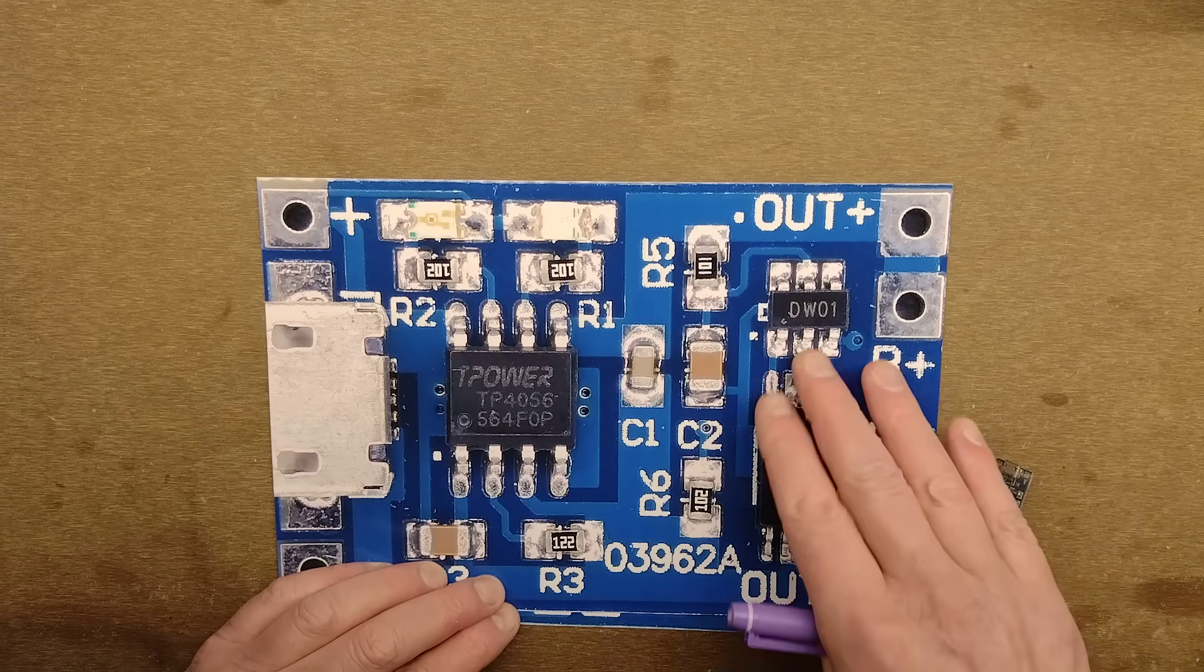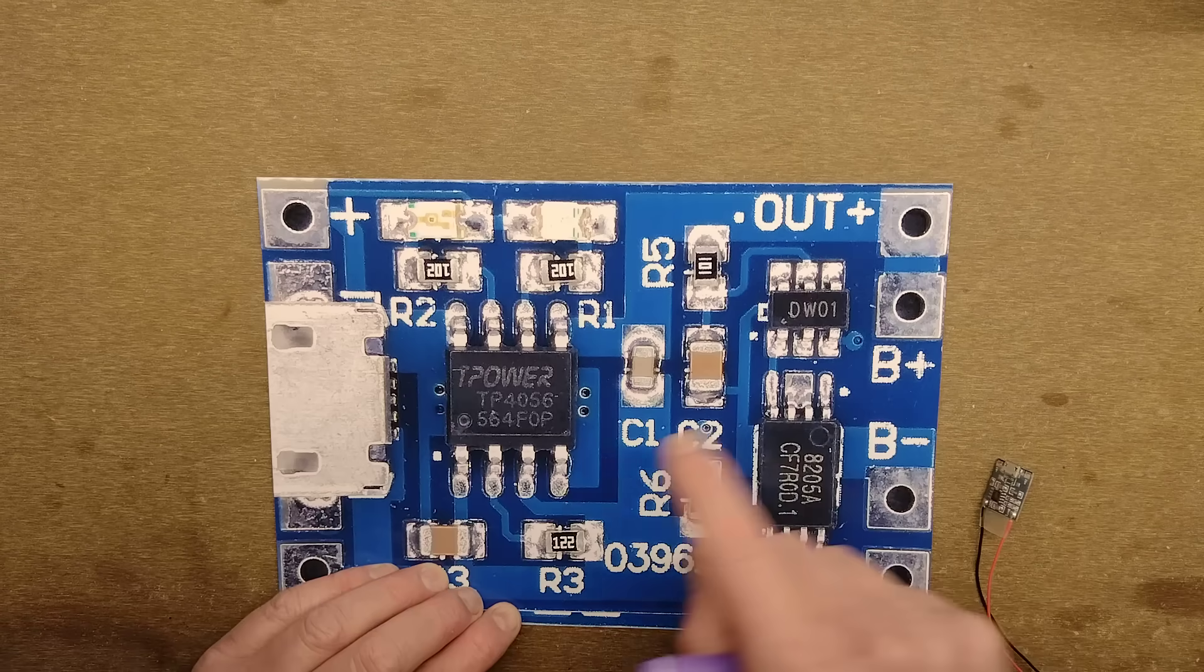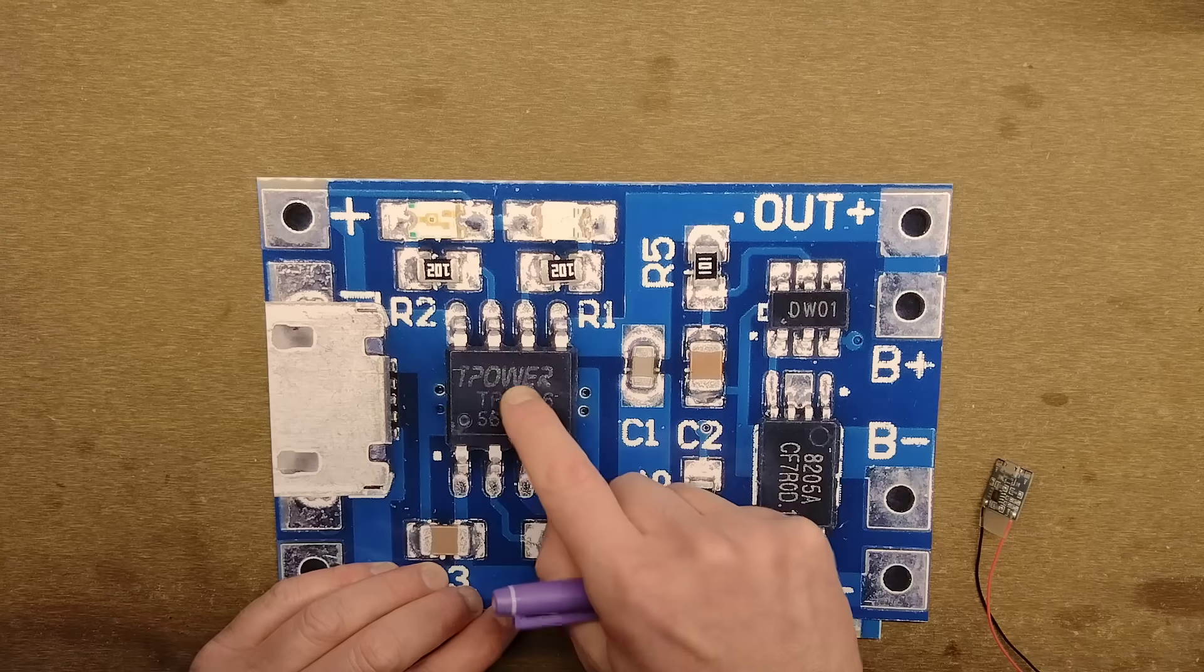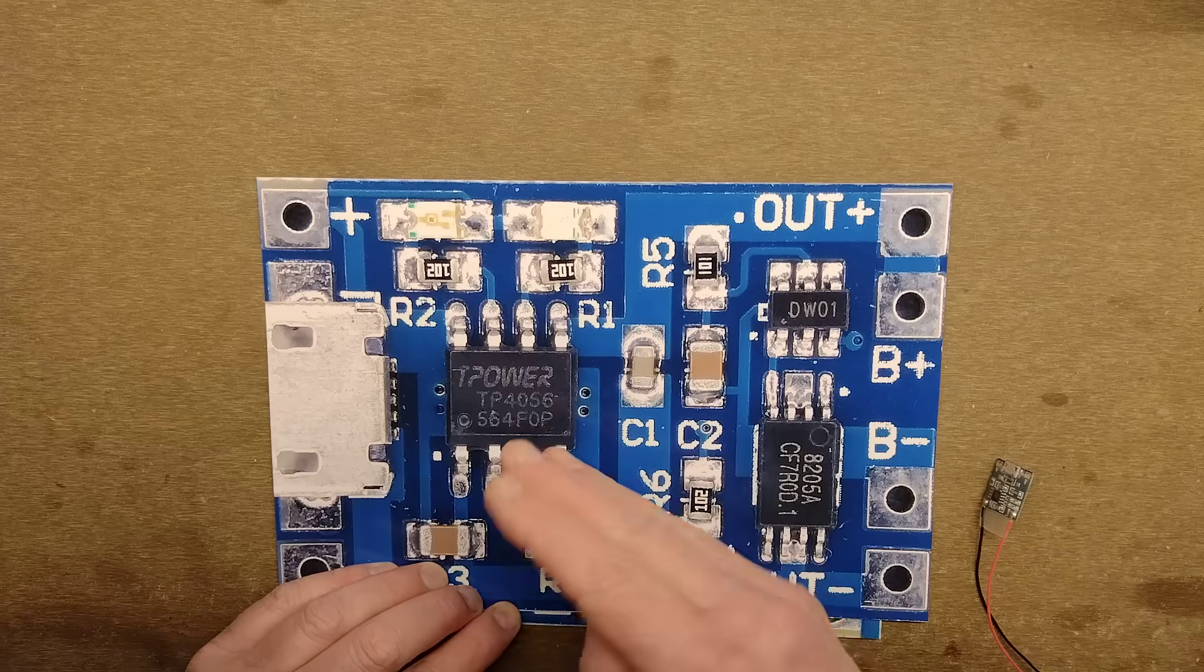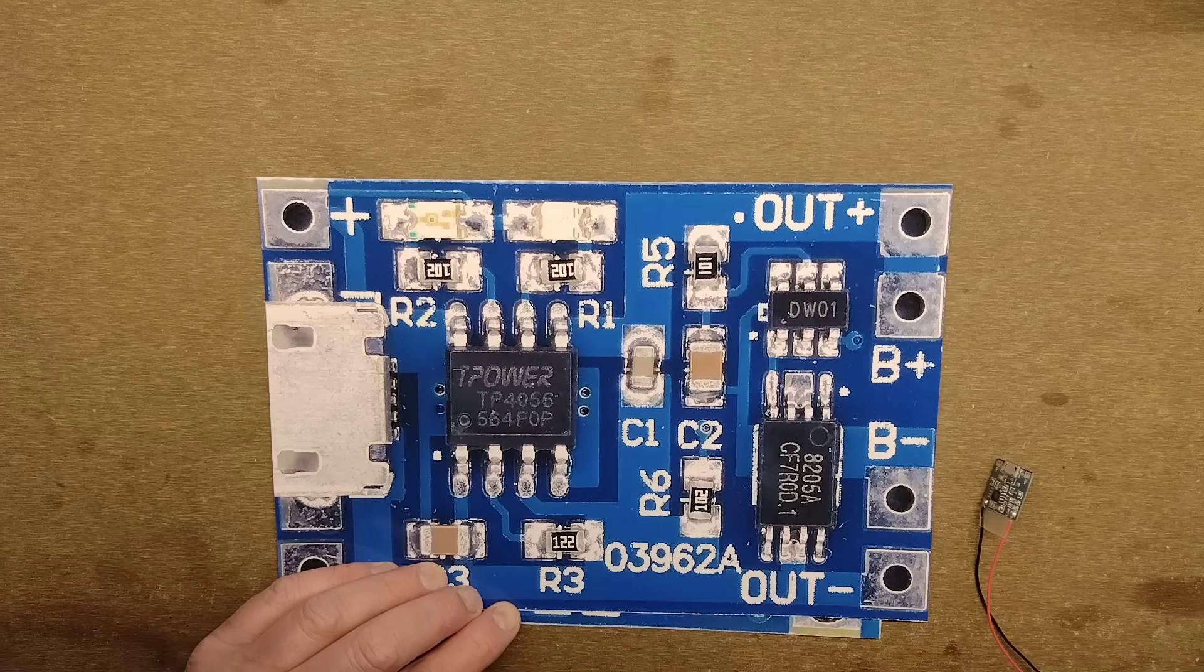It means that even if it does discharge down to the 2.5 volts that this cuts off, all that will happen is when you start charging again, this chip will go into its initial trickle charge mode before switching to full charge mode and bringing it up to the top again. And that is it.